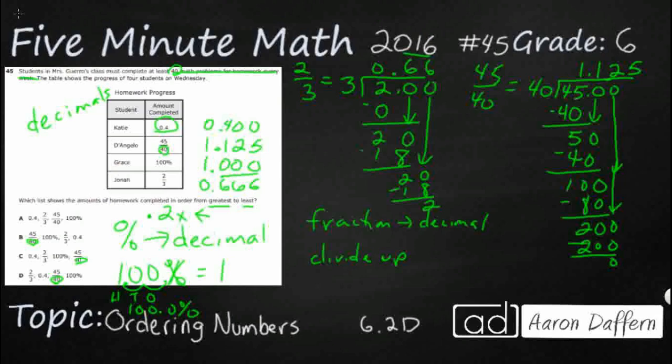So now we have all of our values. Now we just need to go greatest to least. So our greatest is going to be this D'Angelo right there, because it's 1.125. So that's our 45 fortieth. So let's look at that. You know what? B is the only one that has that. Let's make sure everything else is good. 45 fortieth, 100%, two thirds. That looks good. B is our answer.